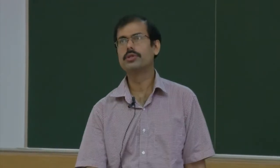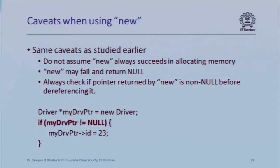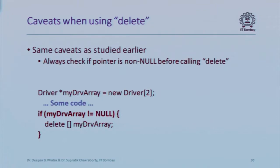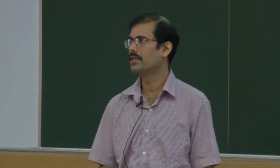Be careful about the usual pointer concerns: new may not return successfully. Before dereferencing a dynamically allocated pointer, check it's not null; if it is null, print an error message saying memory allocation failed. Similarly, before deleting a pointer, check it's not null first. This applies to pointers to basic data types and to structures alike.